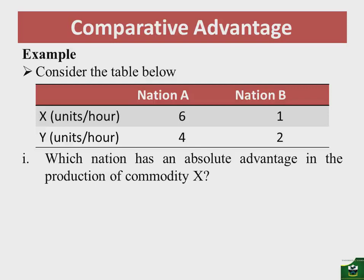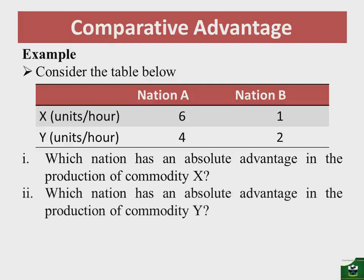Nation B has an absolute disadvantage in the production of commodity X. The second question: which nation has an absolute advantage in the production of commodity Y? If you said nation A, you are right. Nation A produces four units of commodity Y in an hour, while nation B produces two units of Y in the same hour.